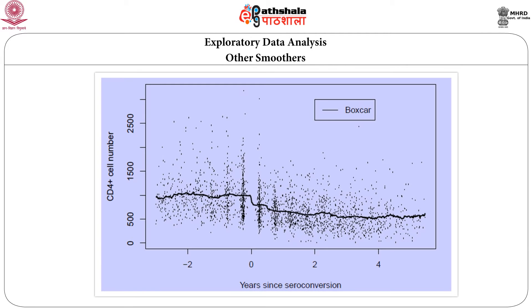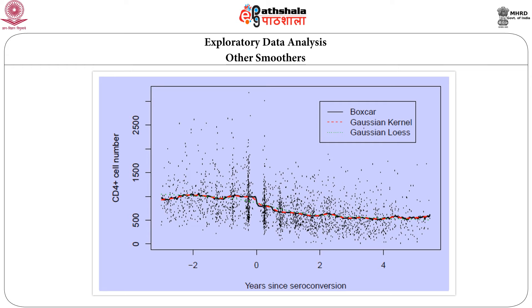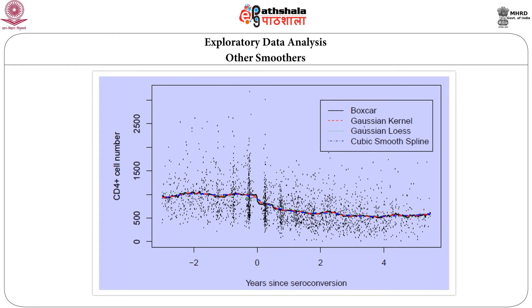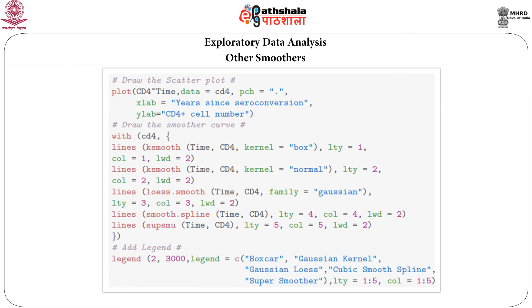The scatter.smooth function fits what is called a LOWESS scatter smoother. There are many ways of producing smoothers: one is called the Boxcar smoother, we can have the Gaussian kernel smoother, the Gaussian LOWESS smoother, the cubic spline smoother, and super smoothers. These are different techniques for smoothing the data. In R, we can use the ksmooth command for Boxcar, ksmooth with kernel equal to normal for the Gaussian kernel, loess.smooth, smooth.spline, and supsmu for the super smoother.